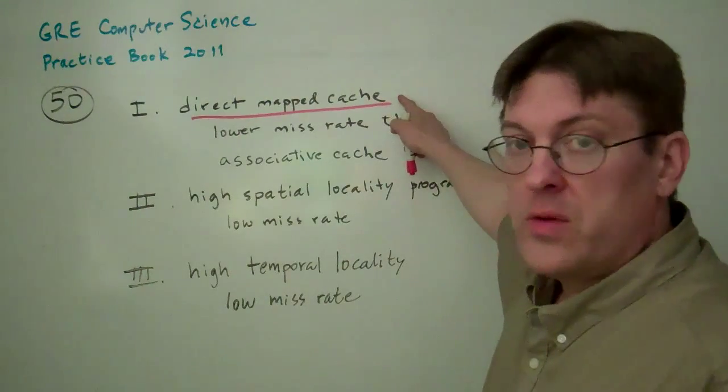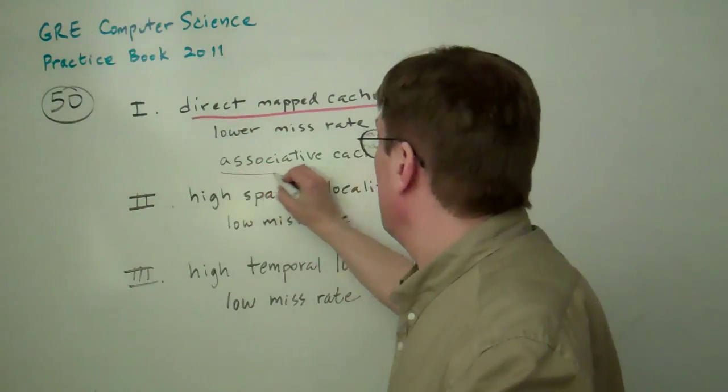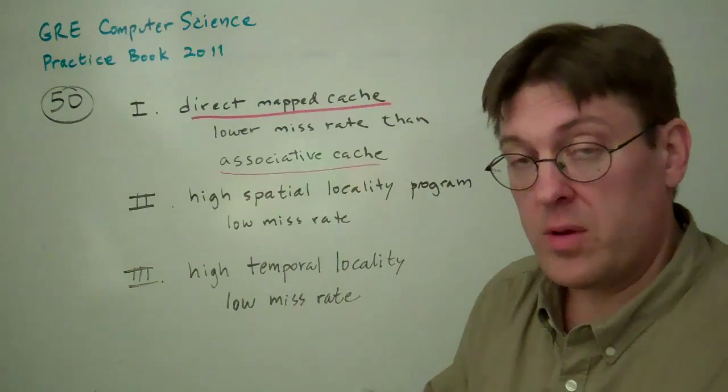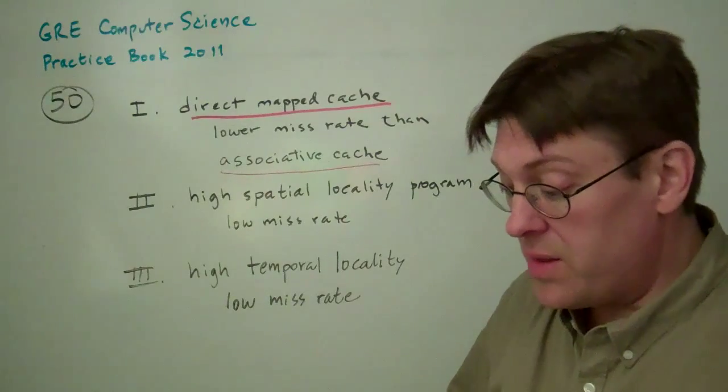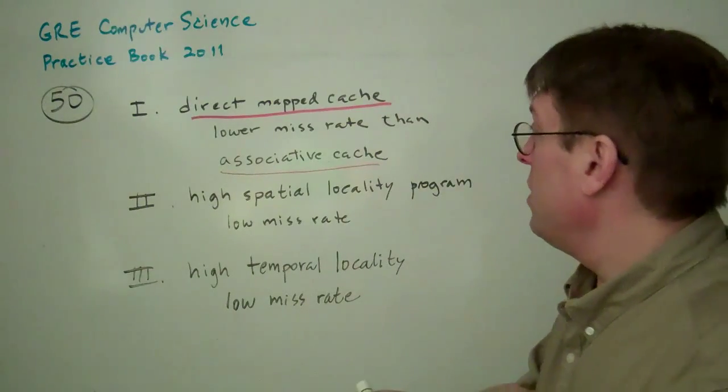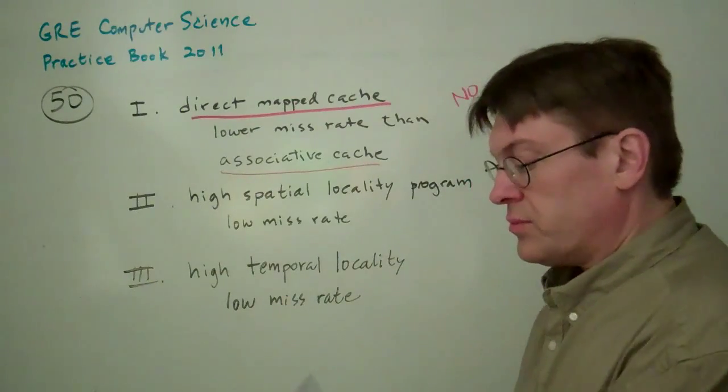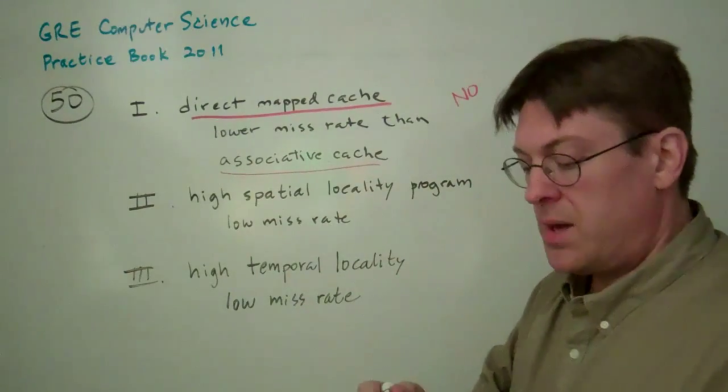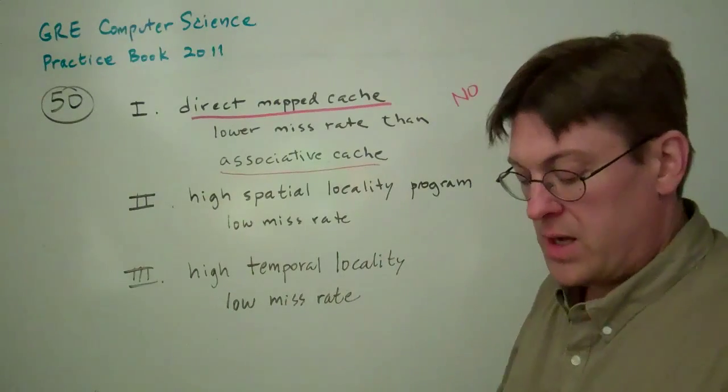In associative cache, you can put the item from main memory in any of the slots available. So to my way of thinking, this would be a no. This means that the statement is not true. The direct mapped cache can't possibly have a lower miss rate than an associative cache.